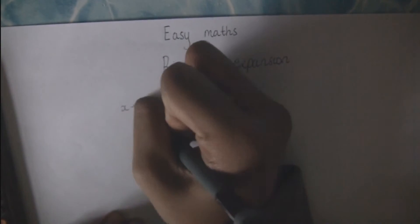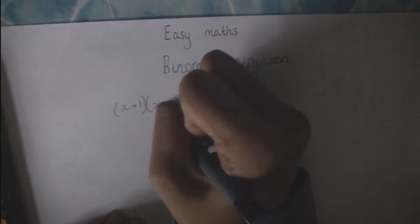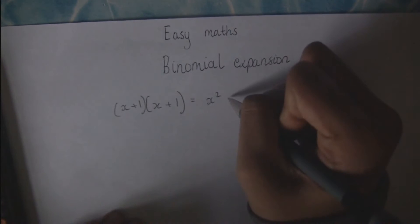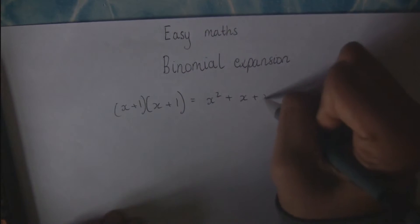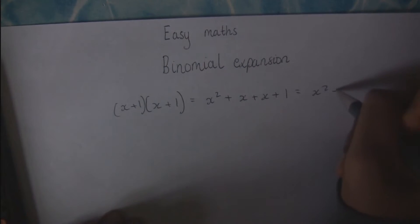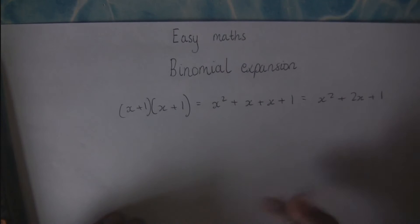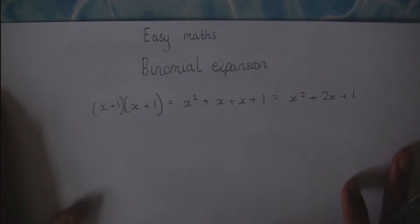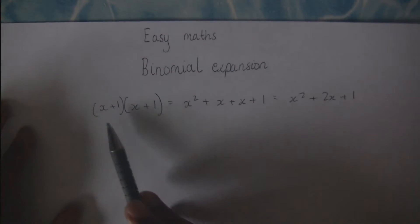At GCSE Maths or lower Maths, you would have come across questions such as (x+1)(x+1) and they would tell you to expand that. To expand that you just get x squared plus x plus x plus 1, which equals x squared plus 2x plus 1. Now obviously this is not too difficult to expand — you just do that times that, that times that, and that times that.